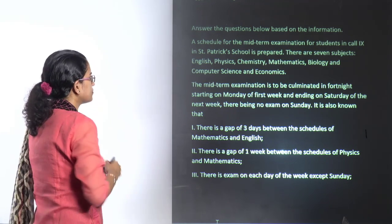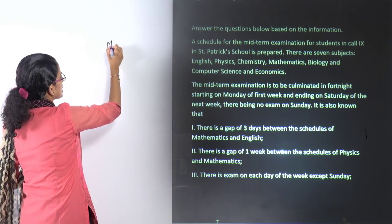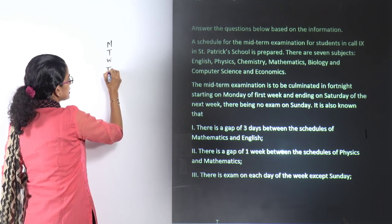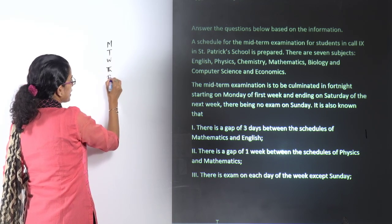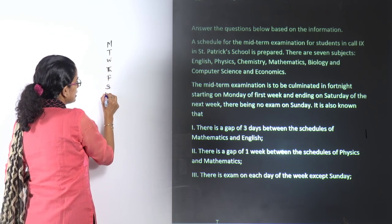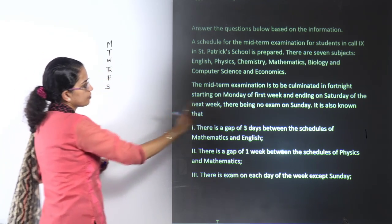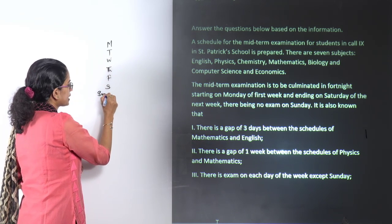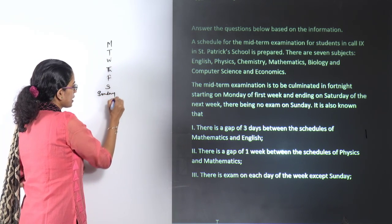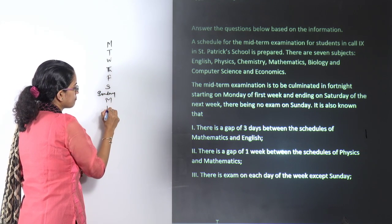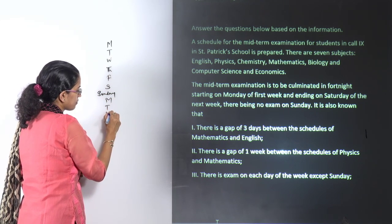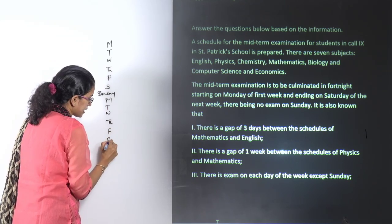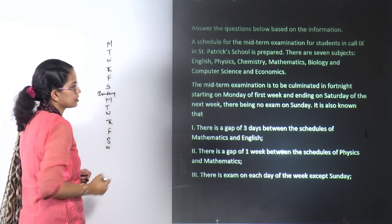Let's first mark down the days, starting Monday, Tuesday, Wednesday, Thursday, Friday, Saturday, Sunday — but on Sunday there is no exam. Then again Monday, Tuesday, Wednesday, Thursday, Friday, and Saturday. So it ends on Saturday.